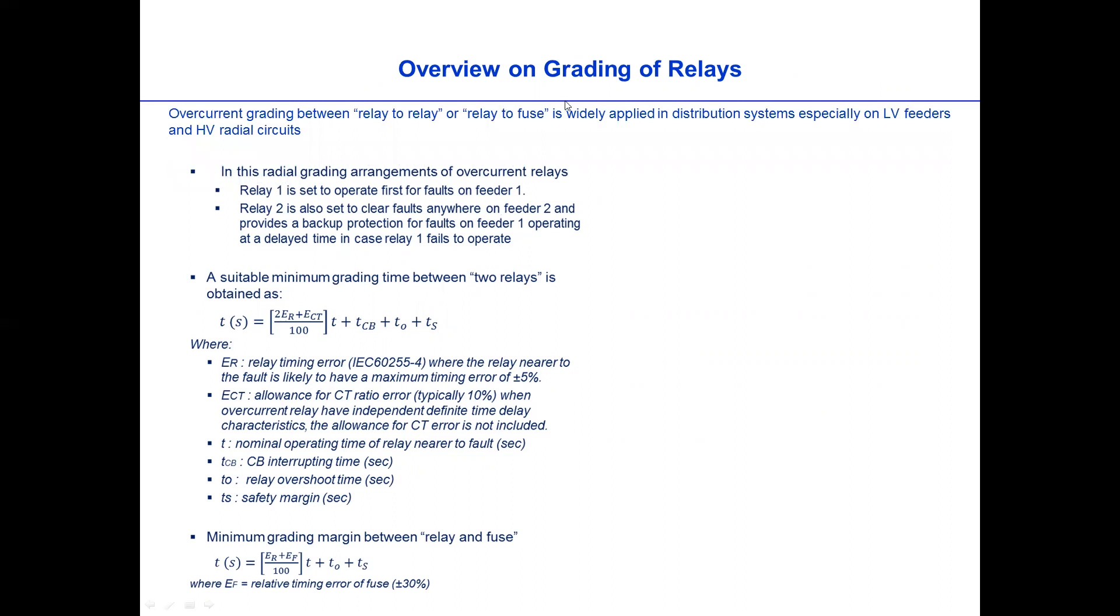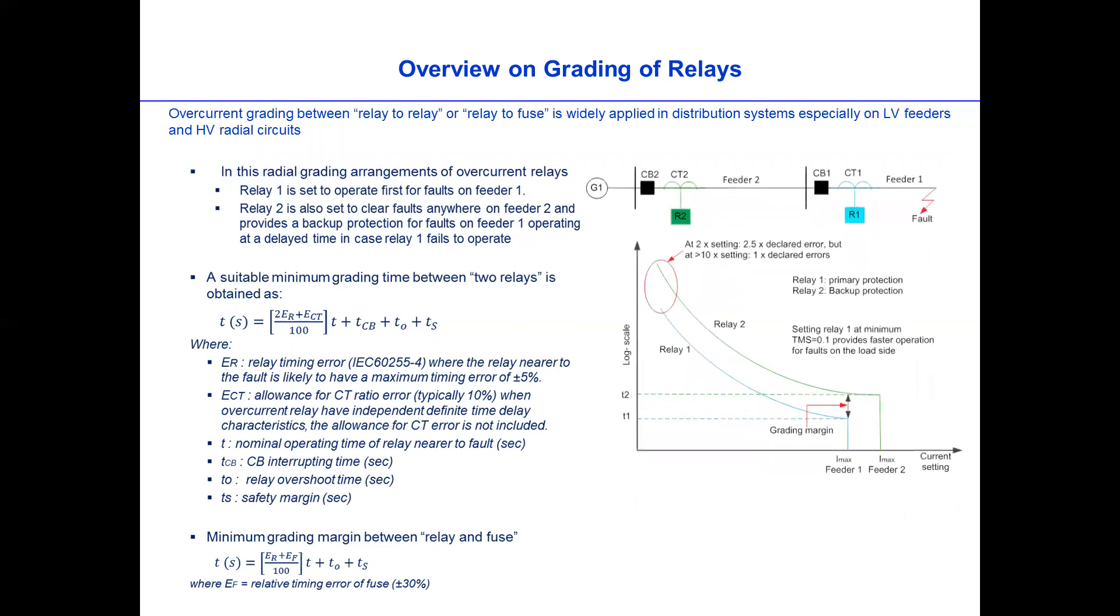So in this case again, we can look at overview on grading of relays. Grading relay using overcurrent protection is normally widely used in the distribution system, especially on LV feeders or HV radial circuits. We also use it in transmission system as a backup due to the difficulty in coordination. So if we look at the diagram on the right side, we have two relays on the single line diagram, which is radial network: relay 1, relay 2, where relay 1 is set to operate first for fault on feeder 1. And relay 2 is designed to operate for any fault in feeder 2 or any fault in feeder 1. But if relay 1 failed, then relay 2 will clear the fault at a delay time.